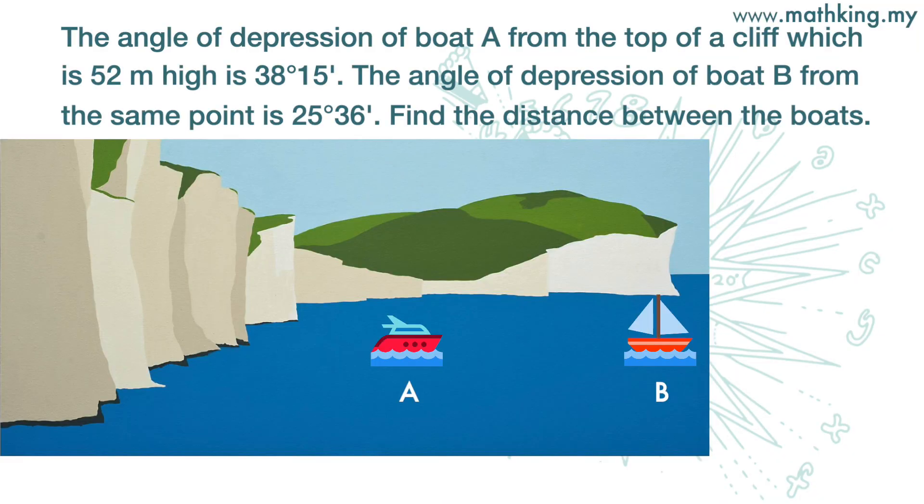The angle of depression of boat A from the top of a cliff, which is 52 meters high, is 38 degrees 15 minutes. The angle of depression of boat B from the same point is 25 degrees 36 minutes. Find the distance between the boats.